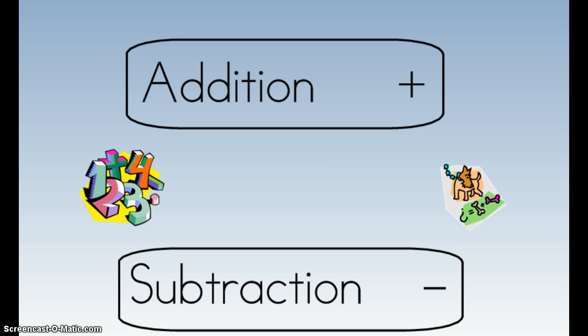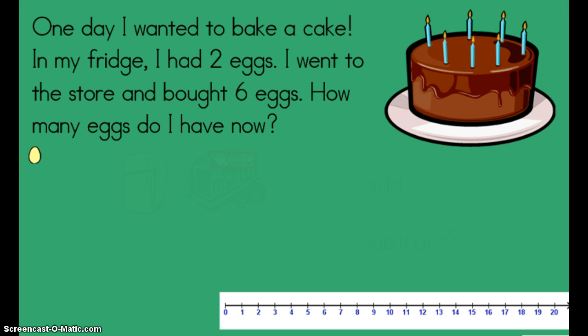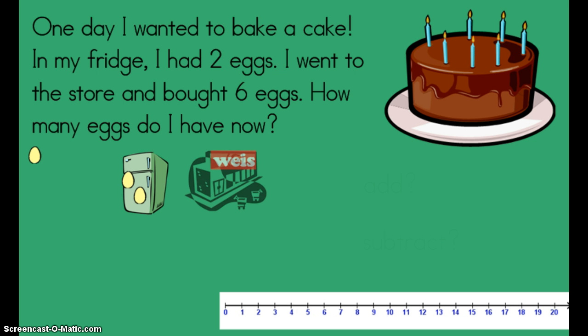One day, I wanted to bake a cake. In my fridge, I had two eggs. I went to the store and bought six eggs. How many eggs do I have now? Okay, open your eyes. In my mind, I pictured something like this. One day, I wanted to bake a cake. In my fridge, I had two eggs. I went to the store and bought six eggs. How many eggs do I have now?